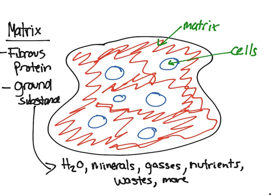Ground substance is made up of water, minerals, gases, nutrients, and other compounds. It's very important because it is how cells obtain their oxygen and nutrients. Ground substance also allows cells to release their wastes — so essentially the ground substance delivers nutrients to cells and collects the waste they produce.